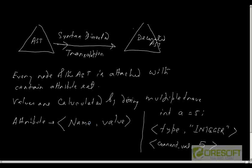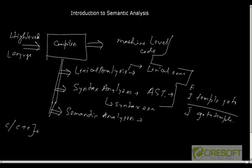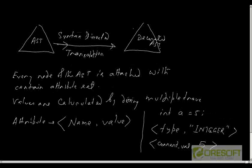In the last class we started our discussion on semantic analysis. By semantic analysis, we put some attributes in an AST obtained from a syntax analyzer or parser and create what we call a decorated AST by evaluating those attributes and performing some semantic checks. Essentially, semantic analysis means creation of a decorated AST from a raw AST by attaching and evaluating a set of attributes on every node of the AST by traversing it.